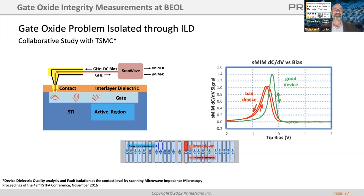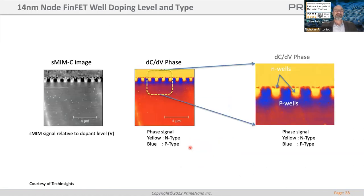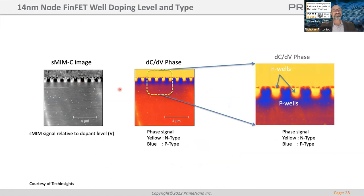Here are some FinFET images — we wouldn't be a complete semiconductor presentation without them. We're looking at the NMP wells in a FinFET. The straight capacitance image shows different dopant levels, and dCdV phase gives the polarity — blue and yellow indicating N and P. You can differentiate the wells quite well, including the depletion region around them, showing fairly decent resolution on this 14-nanometer FinFET device.